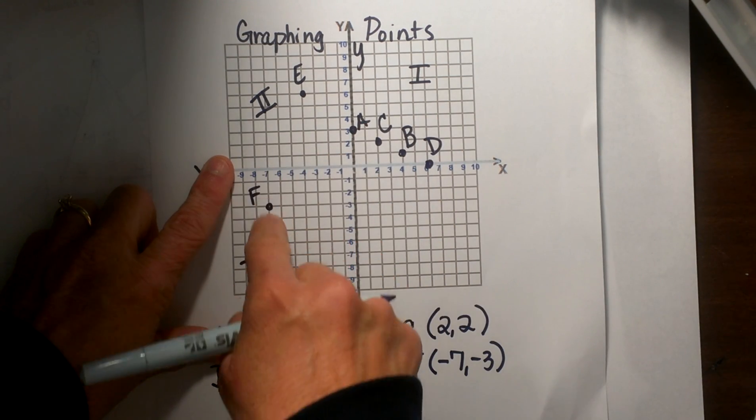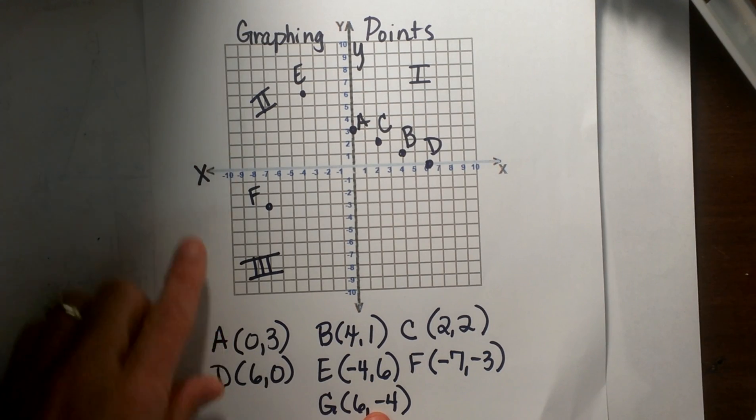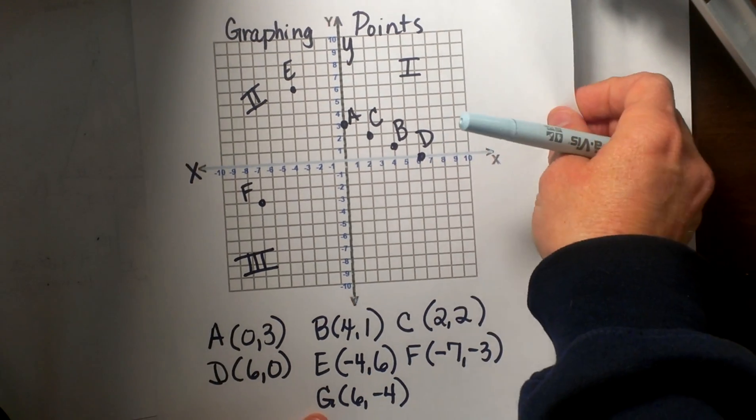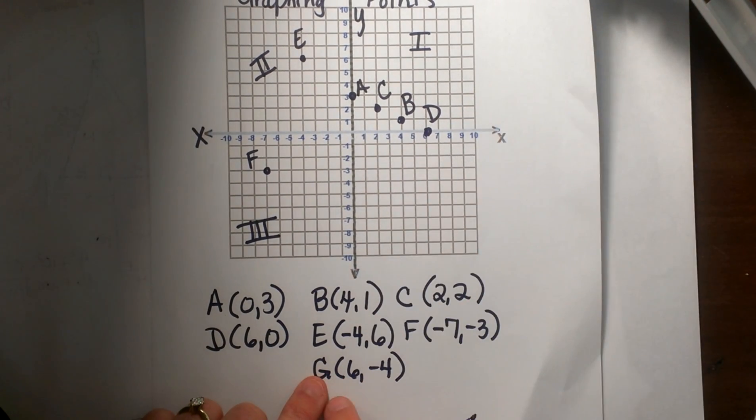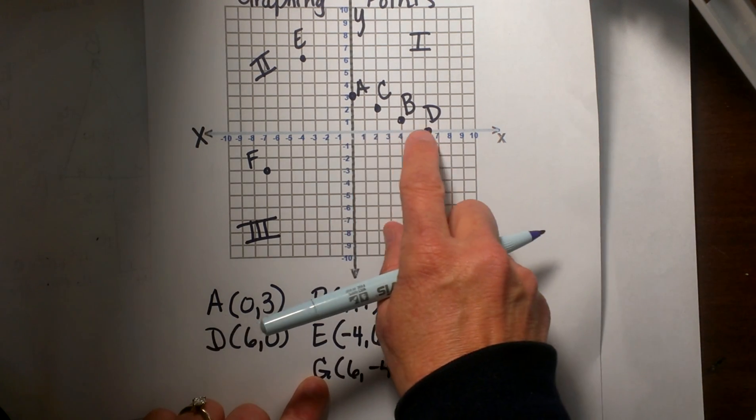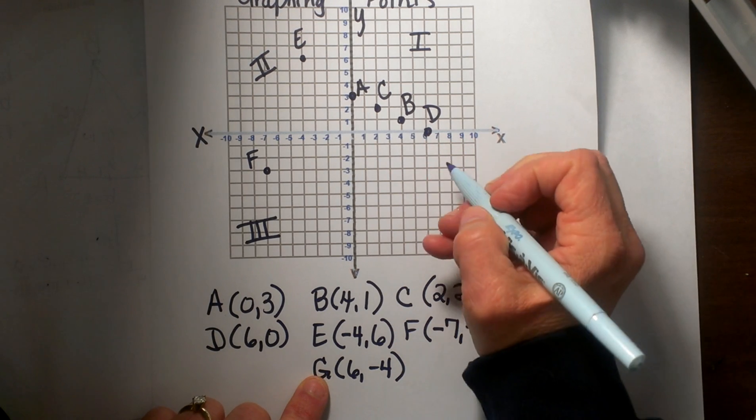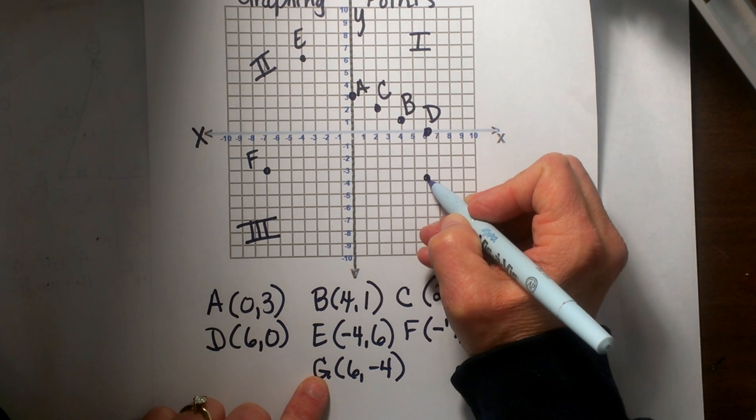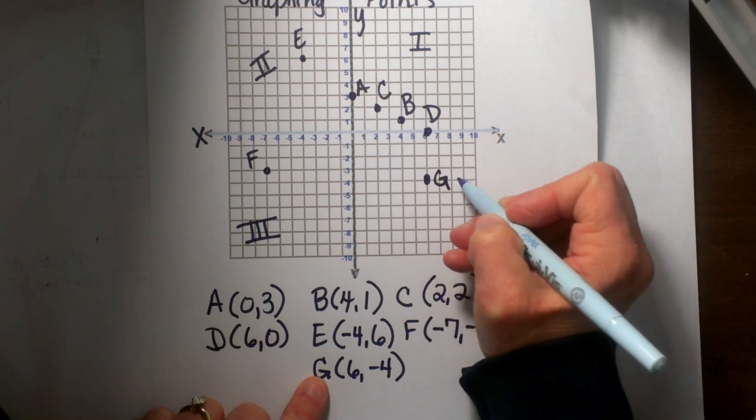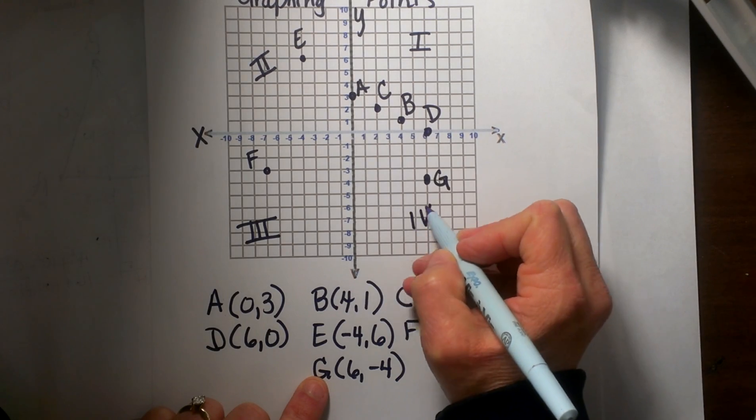So quadrant 3 is all negative negative signed numbers. Now let's look at G. G is positive 6, negative 4, so from the origin I am going to go over 6 but I am going to go in the negative direction or down 4. So that puts us right here for point G and that quadrant is quadrant 4.